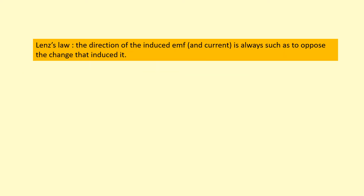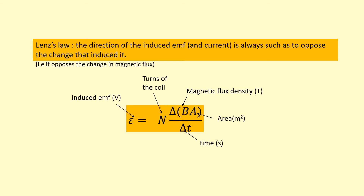Lenz's Law says that the direction of the induced EMF, and therefore the current, is always such as to oppose the change that induced it. In other words, the current flows to oppose the change in flux. So if there's an increase in flux, it's going to try to oppose that increase; if there's a decrease in flux, it's going to try to oppose the decrease.